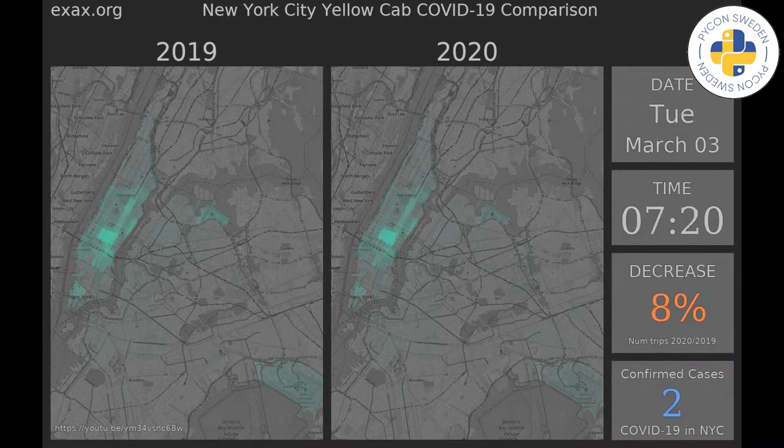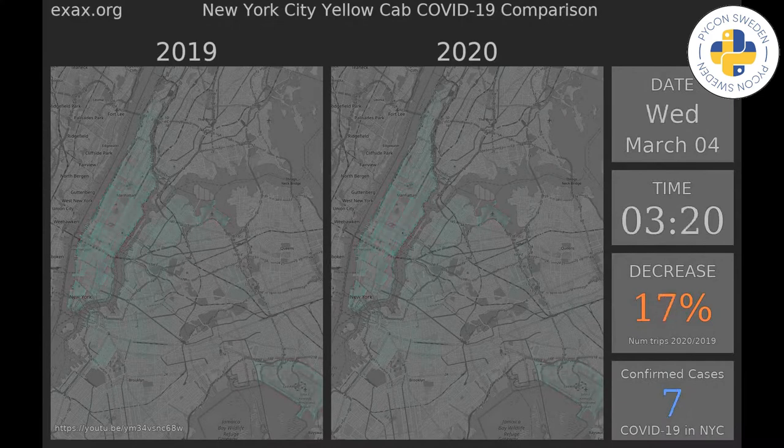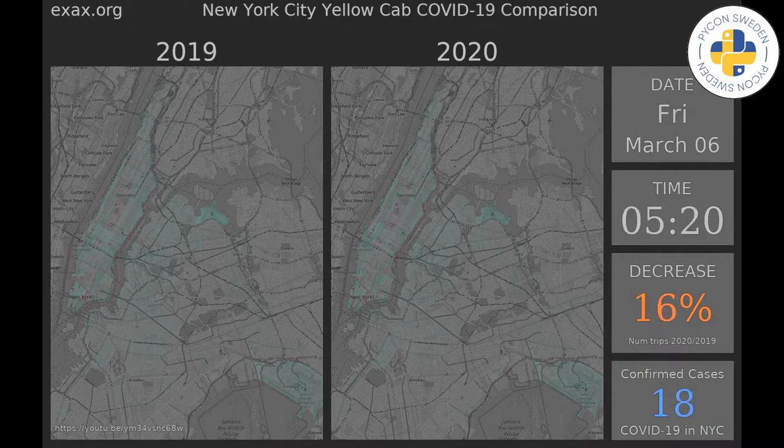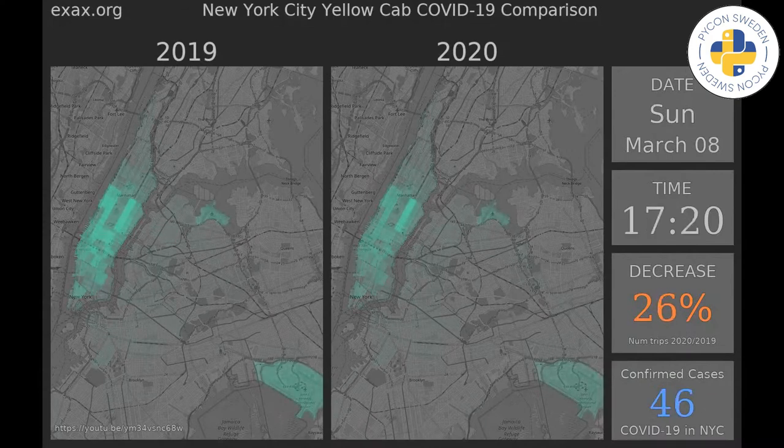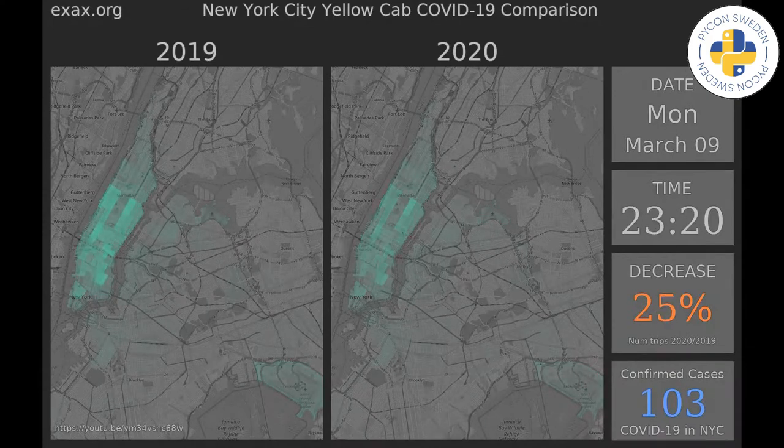The maps to the left and right show Manhattan and the surrounding boroughs. The green overlay represents the amount of taxi drop-offs at each location. A more solid green color indicates more taxis.